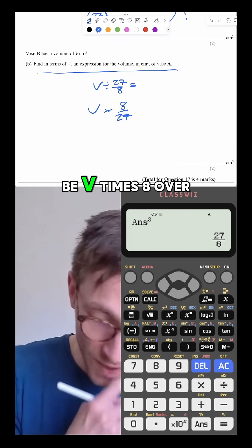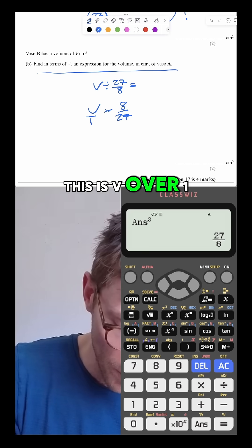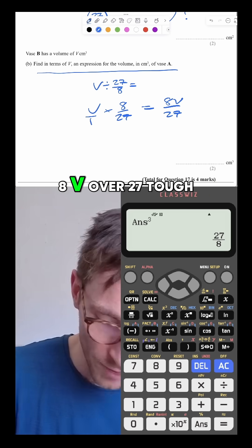So the answer is going to be V times 8 over 24. You times the tops is V over 1. Times the tops times the bottoms, 8V over 27.